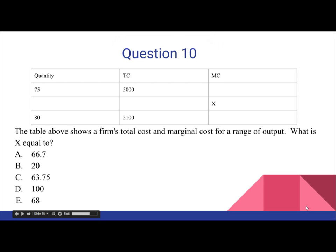Question 10. The table above shows a firm's total cost and marginal cost for a range of output. What is x equal to?